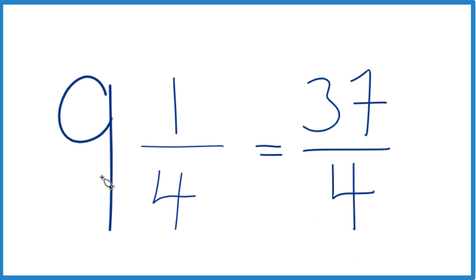And the mixed number 9 and 1/4 equals the improper fraction 37/4.